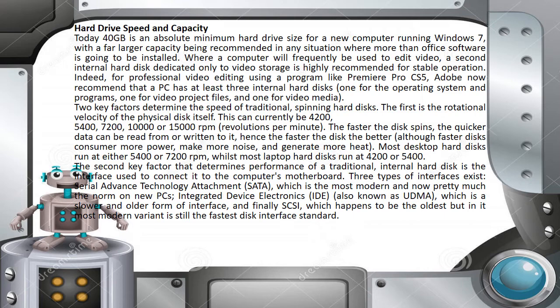The second key factor that determines the performance of a traditional internal hard disk is the interface used to connect it to the computer's motherboard. Three types of interfaces exist: SATA (Serial Advanced Technology Attachment), which is the most modern and now the norm on new PCs; IDE, also known as UDMA, which is a slower and older form of interface; and SCSI, which is the oldest but in its most modern variant is still the fastest disk interface standard.